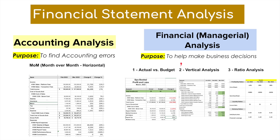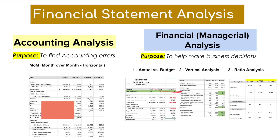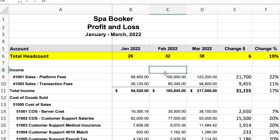So we have four types of analyses I perform as a corporate controller: one accounting analysis and three financial or managerial analyses. If you stick around till the end, I'll tell you exactly which of these four are the most commonly used — the must-haves for any corporate controller. Let's take a look at the first one and how I set up my analysis in Excel for my month-over-month horizontal accounting analysis.